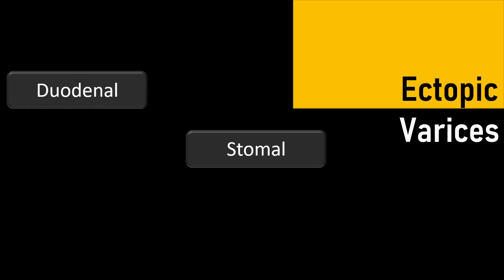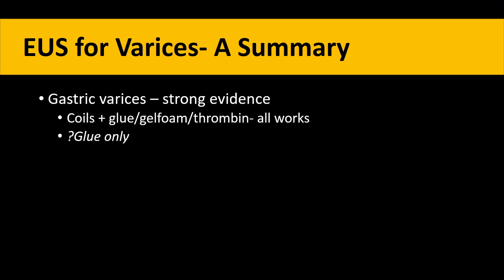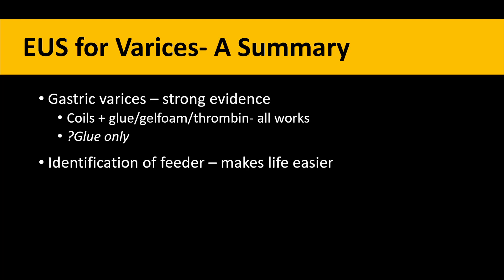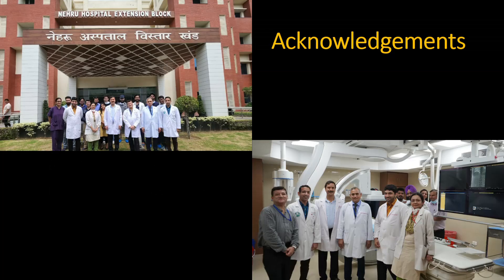We can do the same for ectopic varices — whether stomal, duodenal, or rectal varices — using EUS or tackling them endoscopically; there is not much data on that yet. For gastric varices, we have strong evidence for EUS using coils with glue, gel foam, thrombin, or coils alone — and over time we are realizing that glue only is comparable. We will be presenting our data on coils with glue versus glue alone on Sunday morning. Identification of the feeder vessel definitely makes life easier, and pre-procedural CT is helpful. Whether EUS can be used for esophageal varices and shunts — the data is not there yet, but there is promising data coming. Watch this space for more. Thank you very much.